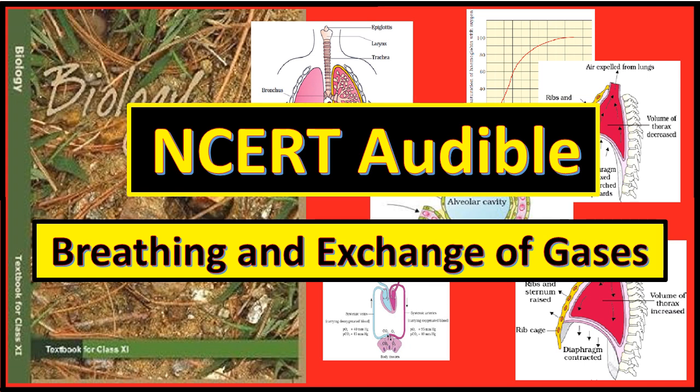Respiration involves the following steps: breathing or pulmonary ventilation by which atmospheric air is drawn in and carbon dioxide-rich alveolar air is released out; diffusion of gases (oxygen and carbon dioxide) across the alveolar membrane; transport of gases by the blood; diffusion of oxygen and carbon dioxide between the blood and tissues; and utilization of oxygen by the cells for catabolic reactions and resultant release of carbon dioxide. Cellular respiration has been dealt with in chapter 14 separately.